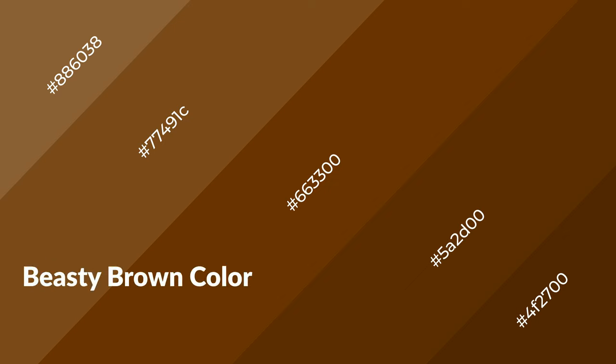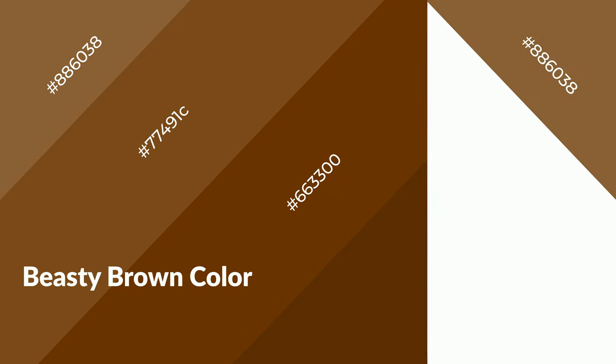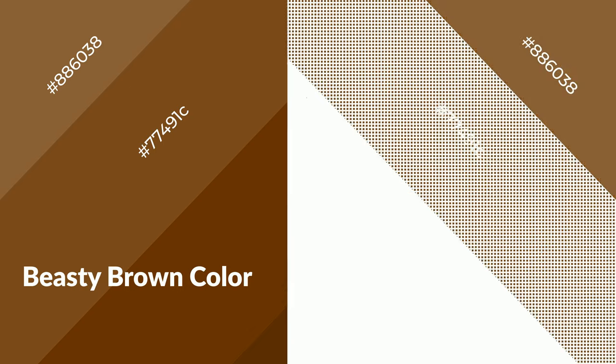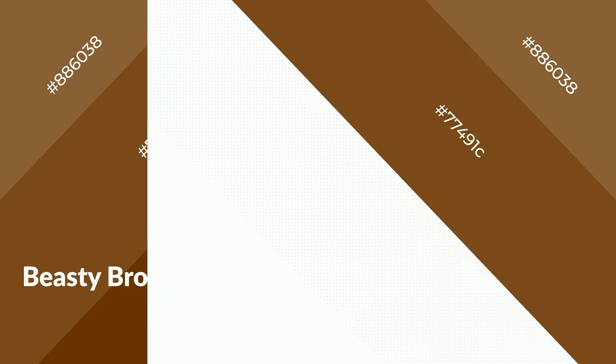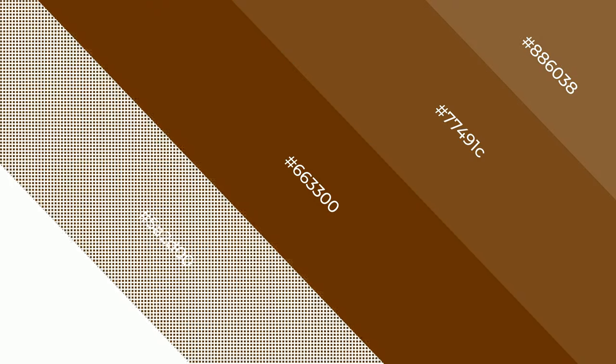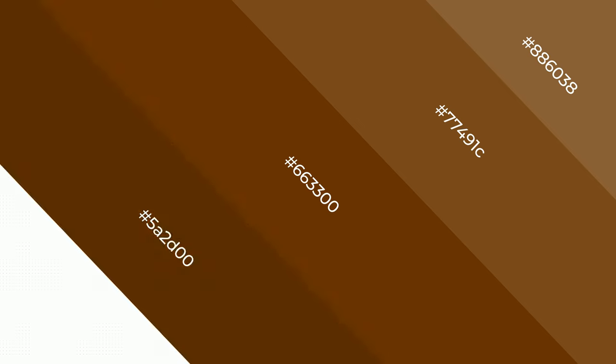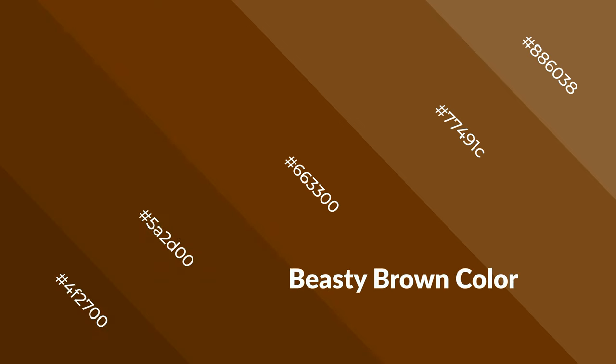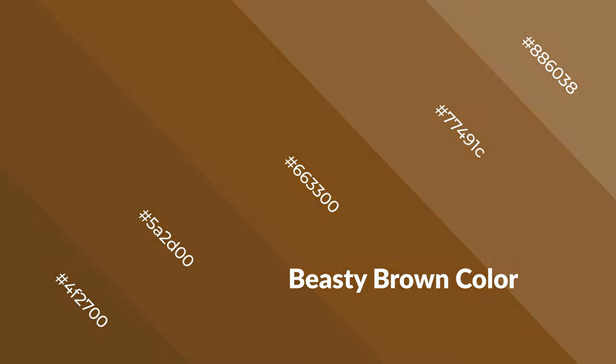Beastie Brown is a warm color and it emits cozier and active emotions. Warm colors are symbols of warmth, fire, heat, and sunshine. It also evokes joy, passion, love, and even anger emotions. You can see them used in restaurants and gyms.